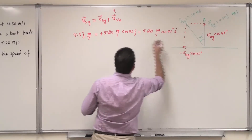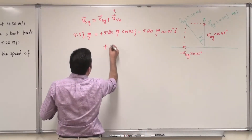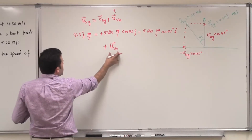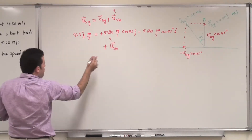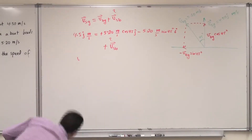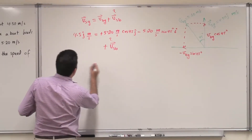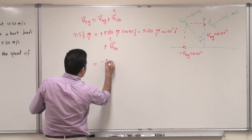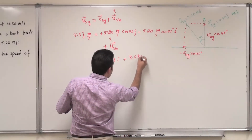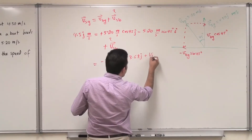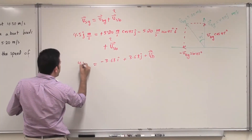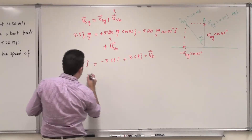This along the i-hat plus the unknown term — the velocity of the ship relative to the boat. Rearranging the equation so that the unknown is on one side and everything else is on the other, we compute the known vectors to get minus 3.68 i-hat plus 3.68 j-hat plus the velocity of the ship relative to the boat, which should equal 4.5 j-hat.